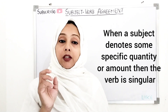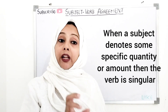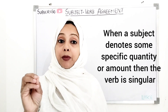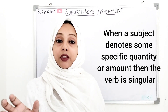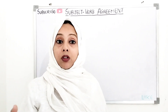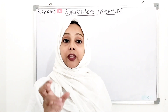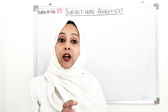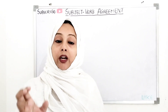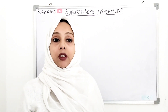If a noun is plural but denotes a specific quantity or amount, then it agrees with a singular verb. For example: '50,000 is a big amount.' The subject denotes a specific number, so we use the singular verb 'is.'